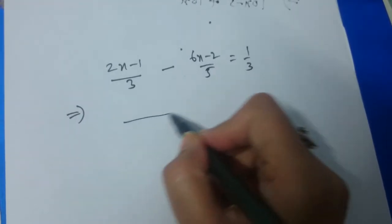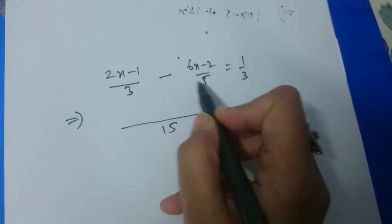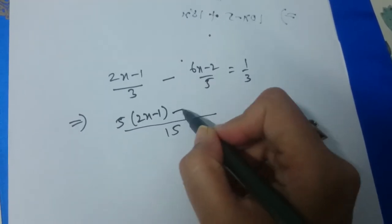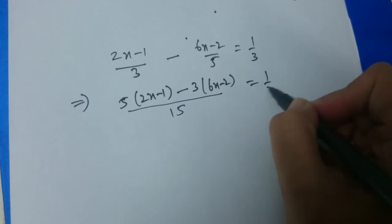In the left side we will take LCM. 15 is the LCM, so 5 into 2x minus 1 minus 3 into 6x minus 2 is equal to 1 by 3.